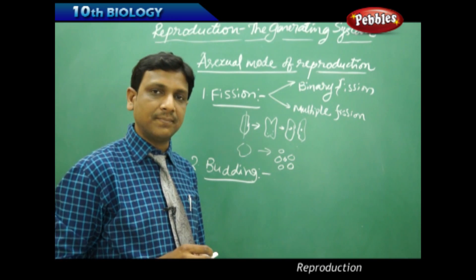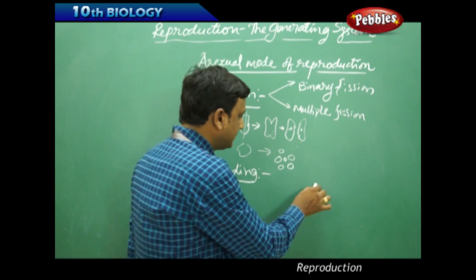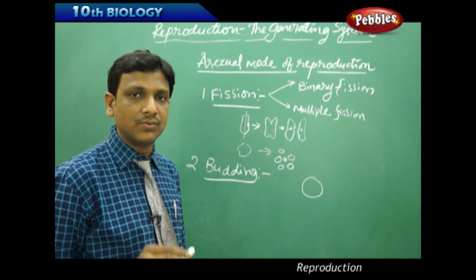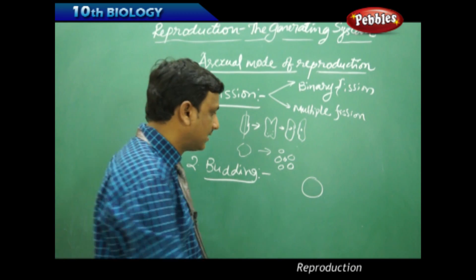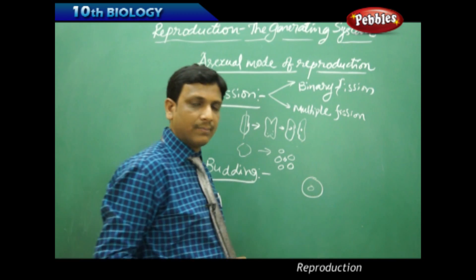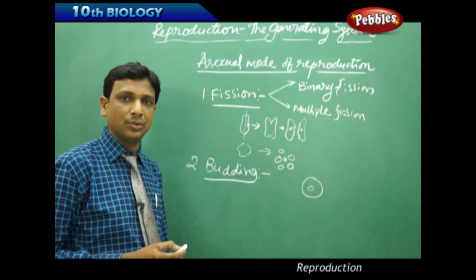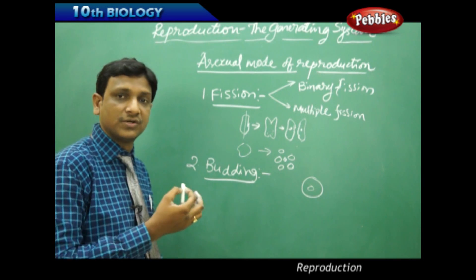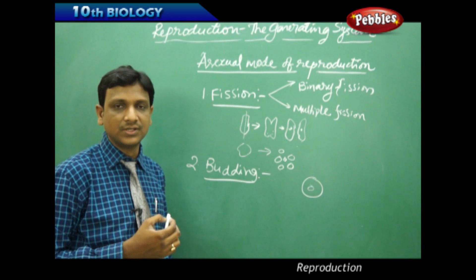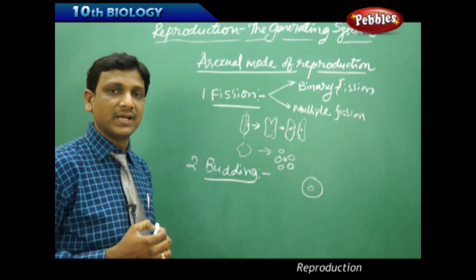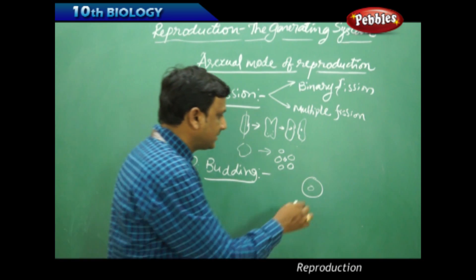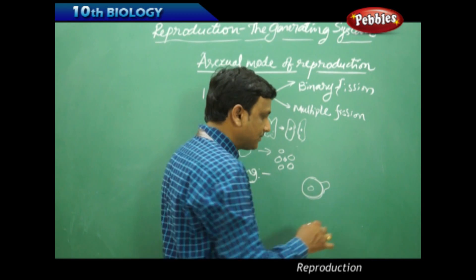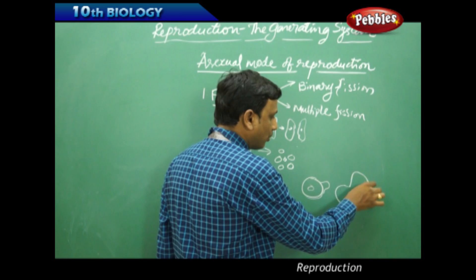Budding is observed in yeast. Yeast is unicellular fungi - in the fungi group, yeast is the only organism with a single cell. Yeast is commercially used in making bread, idli, dosa, and other fermented foods, and in the production of alcohol. Yeast reproduces by a process called budding. On the surface of its body, it produces a protrusion or a bulge.